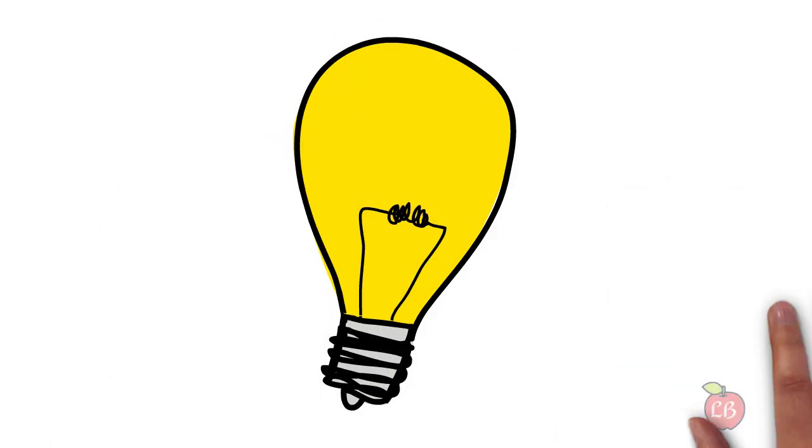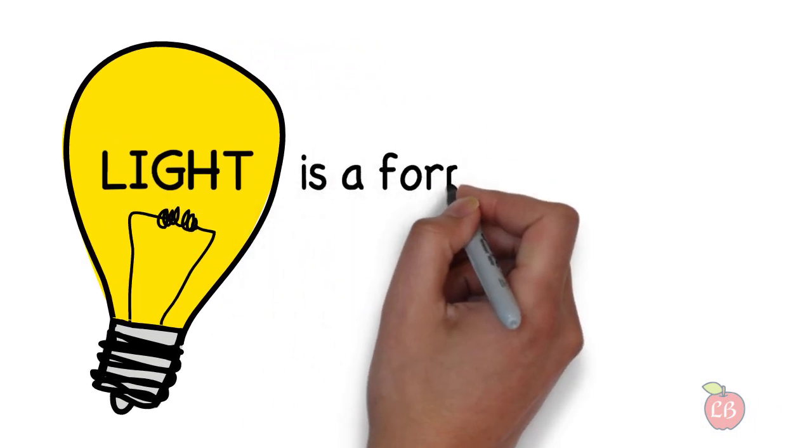Light and shadows. What is light? Light is a form of energy.